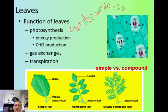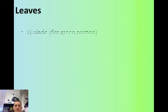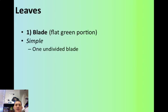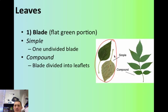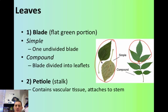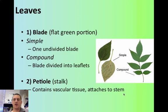Leaves also function in gas exchange and transpiration, which is a form of gas exchange — letting water in and out. There are two basic types of leaves: a simple leaf, which is one flat undivided leaf, and a compound leaf, where the blade is divided into leaflets. Then your petiole, or stalk, is where the vascular tissue is actually contained. It attaches to the stem and contains the xylem and phloem, which we're going to talk about in a few more slides.